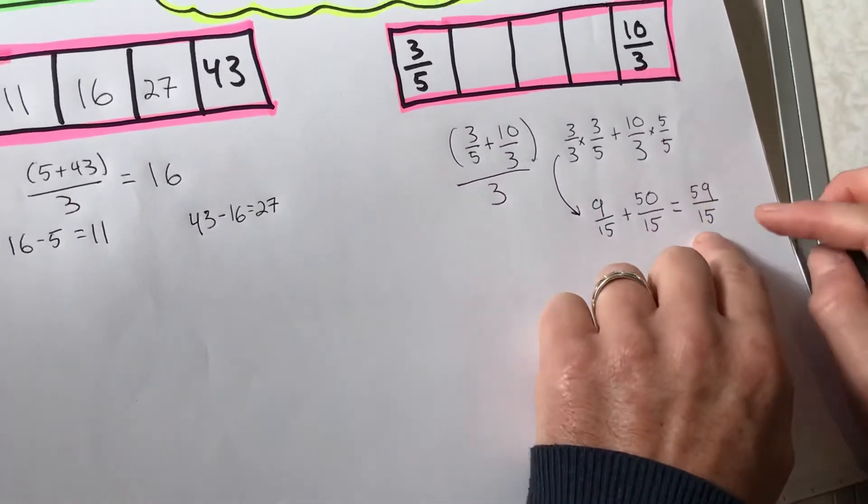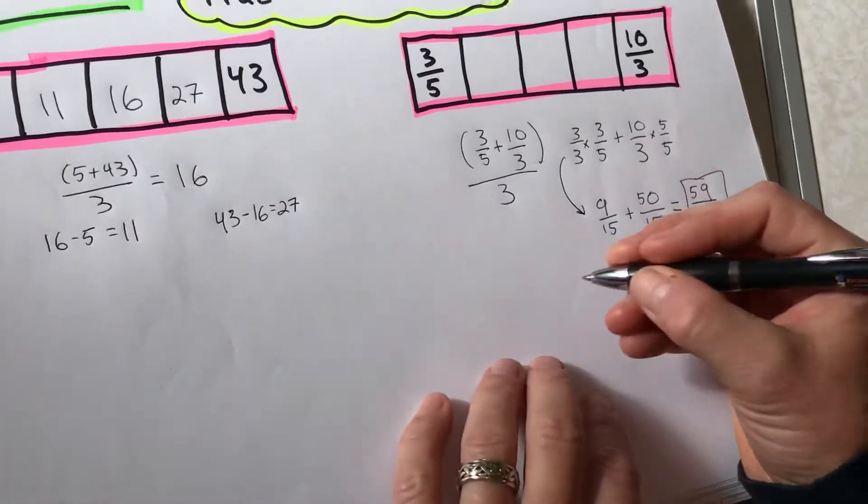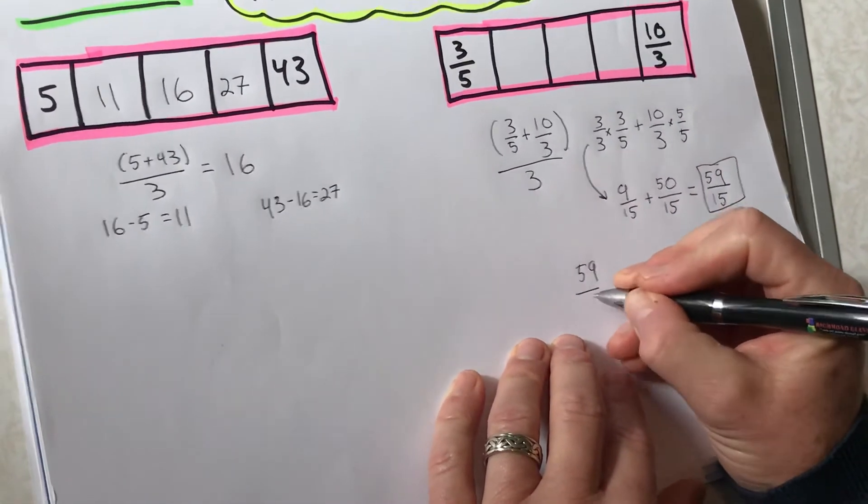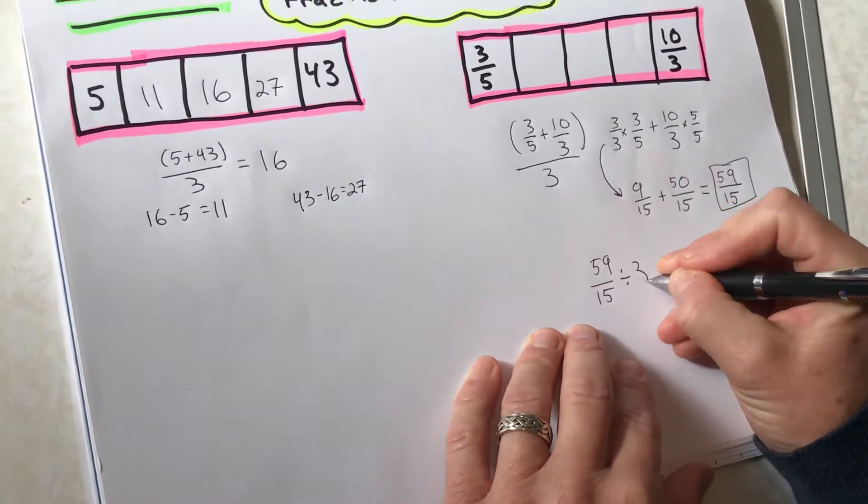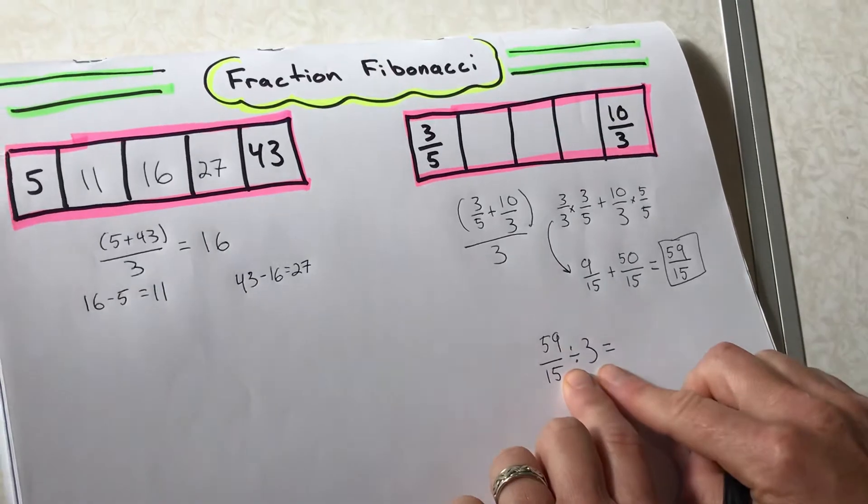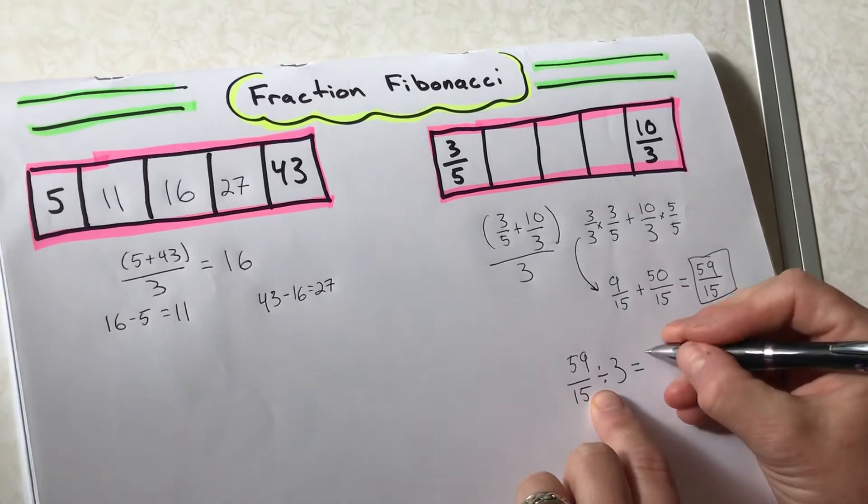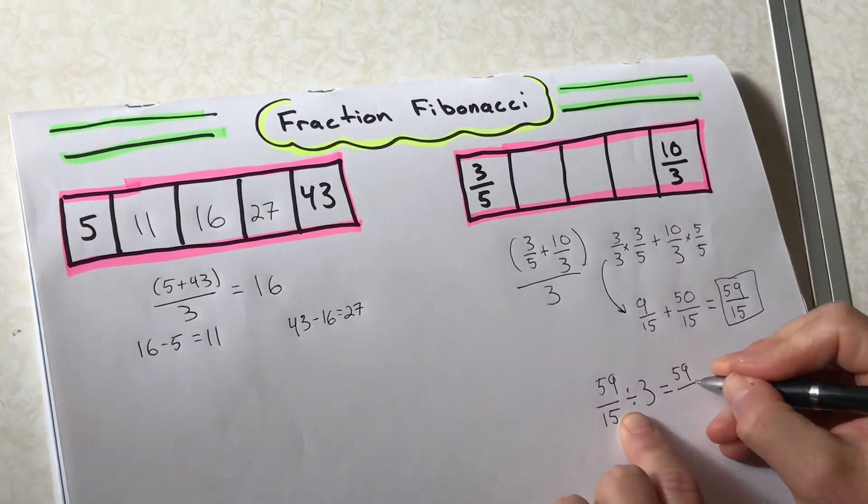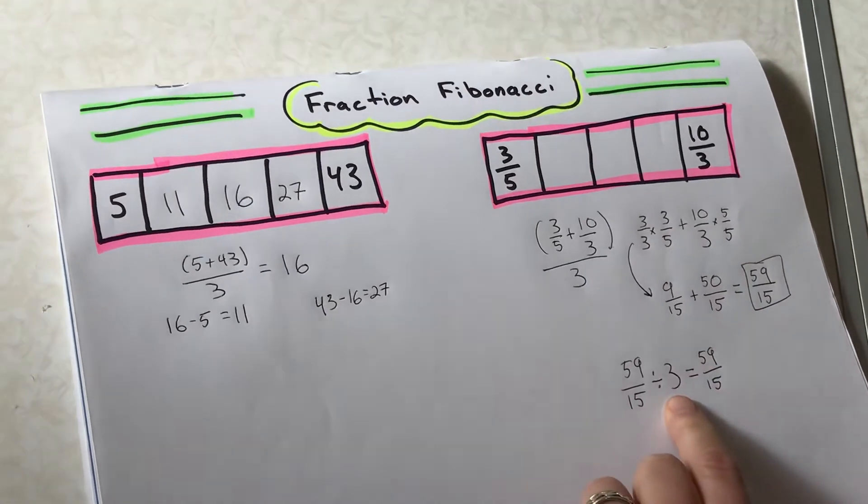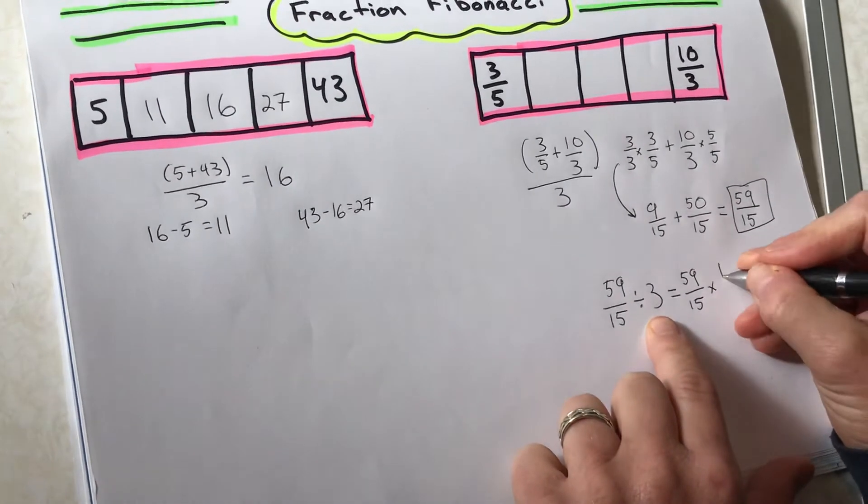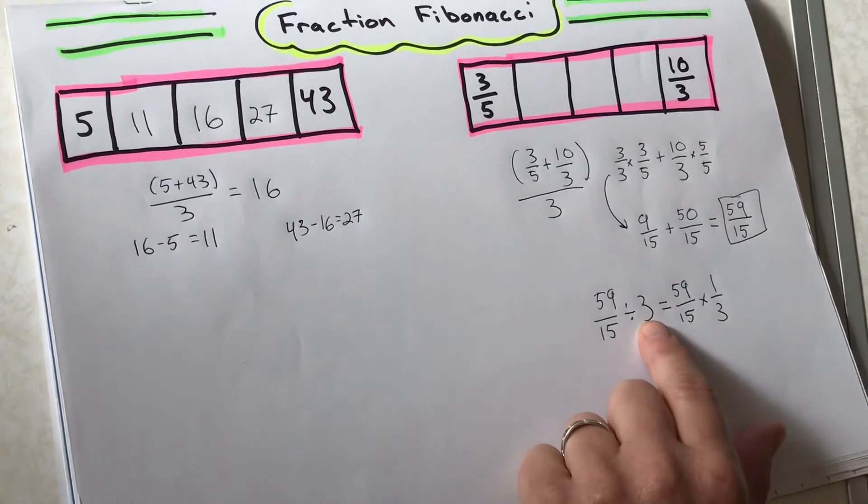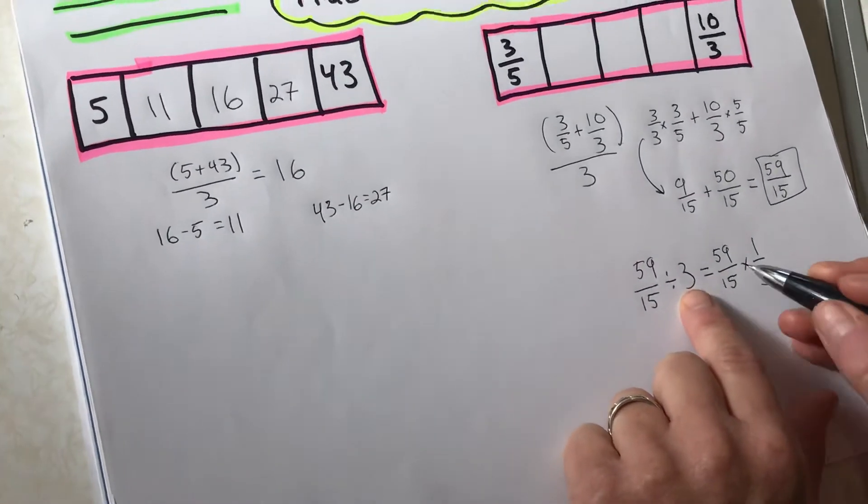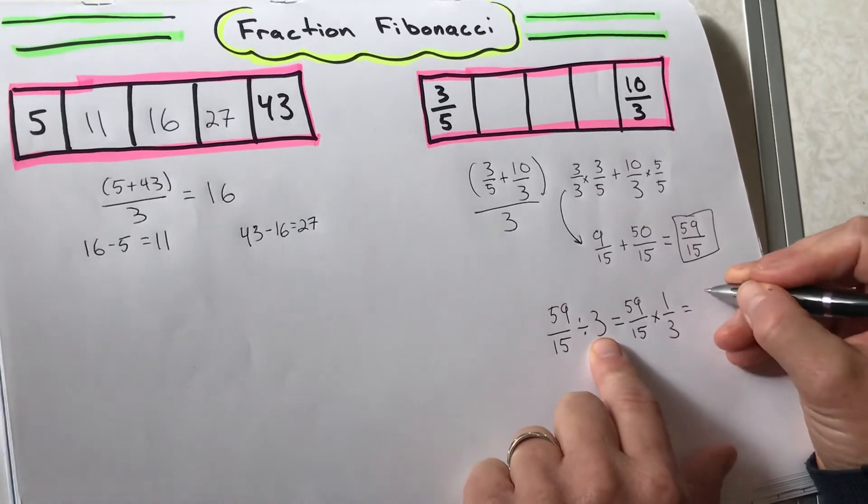And then of course, I have to divide that by three. So 59 fifteenths divided by three. Well, what does that mean? Dividing by three means I'm gonna multiply by the reciprocal. And what is the reciprocal of three? Of course, that's one third. So the key here is dividing by a number means we multiply by its reciprocal here in fraction land.